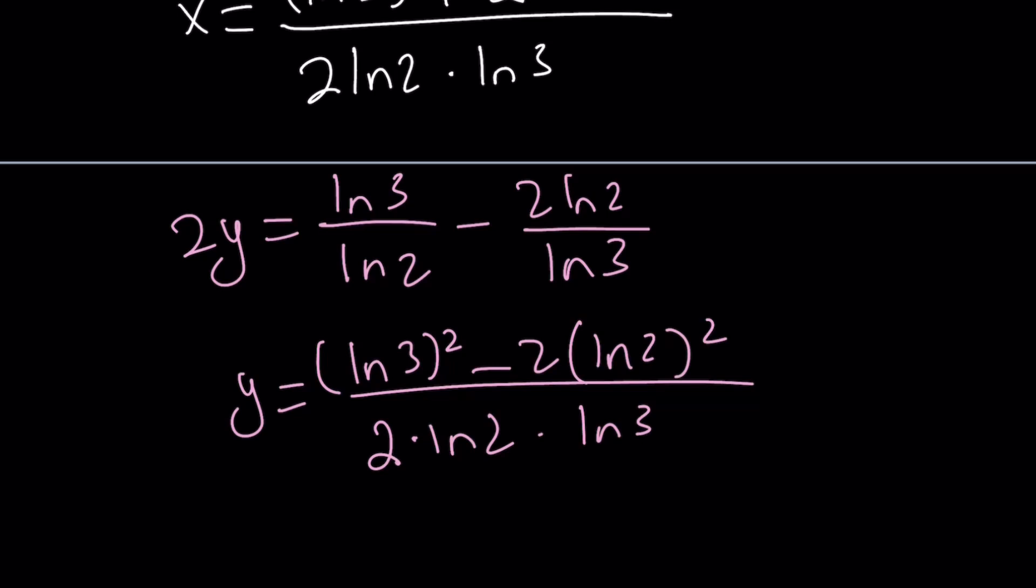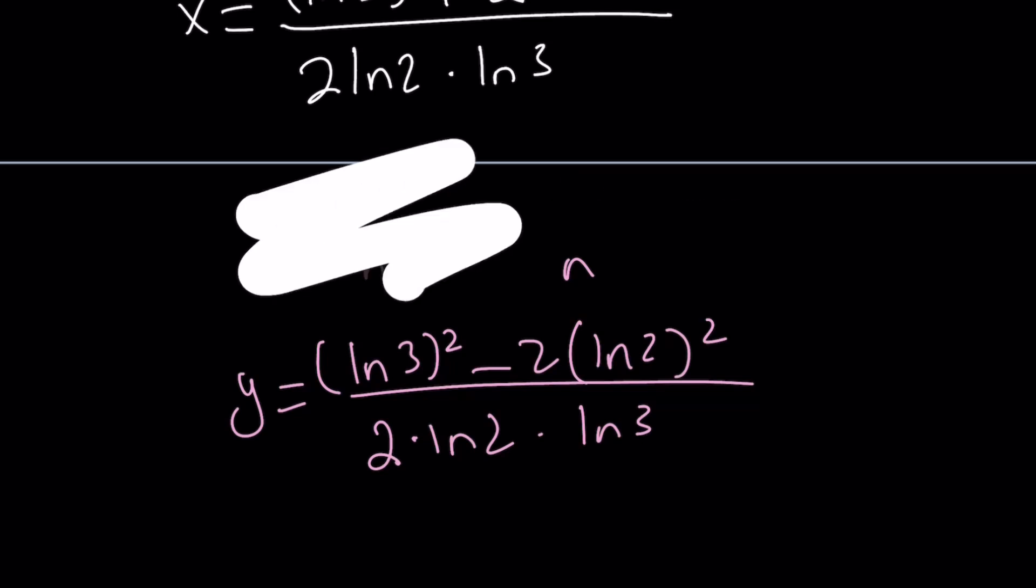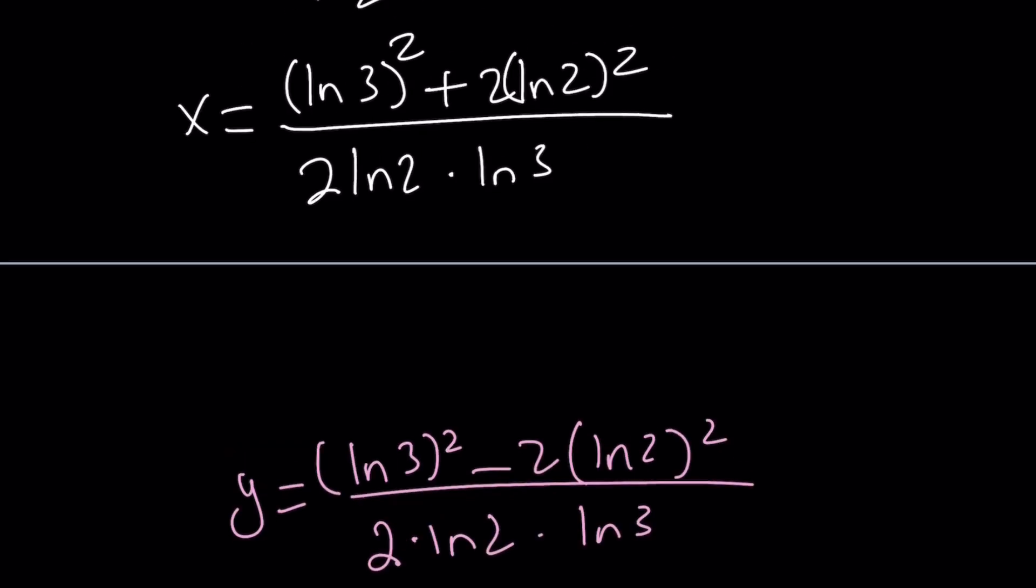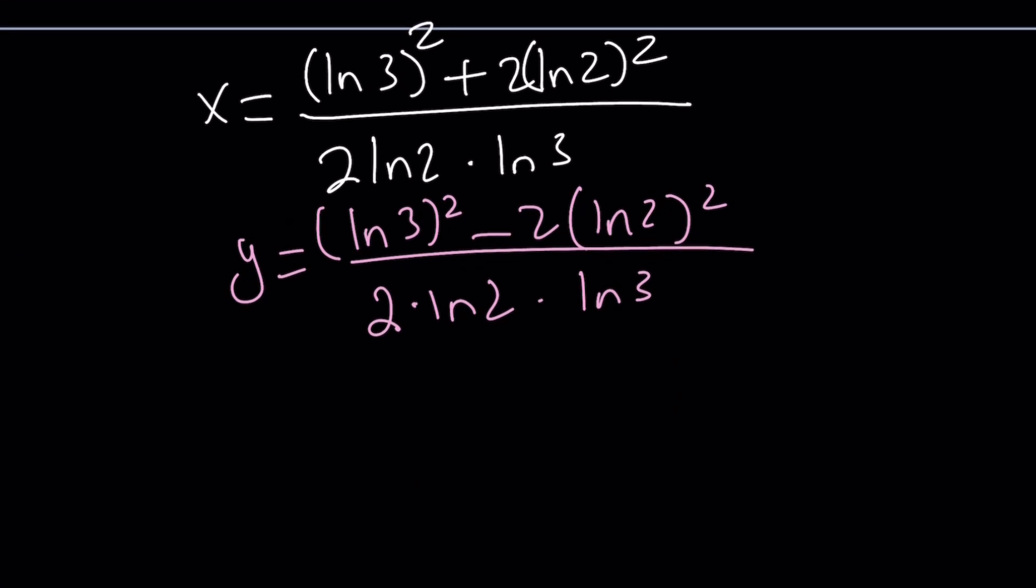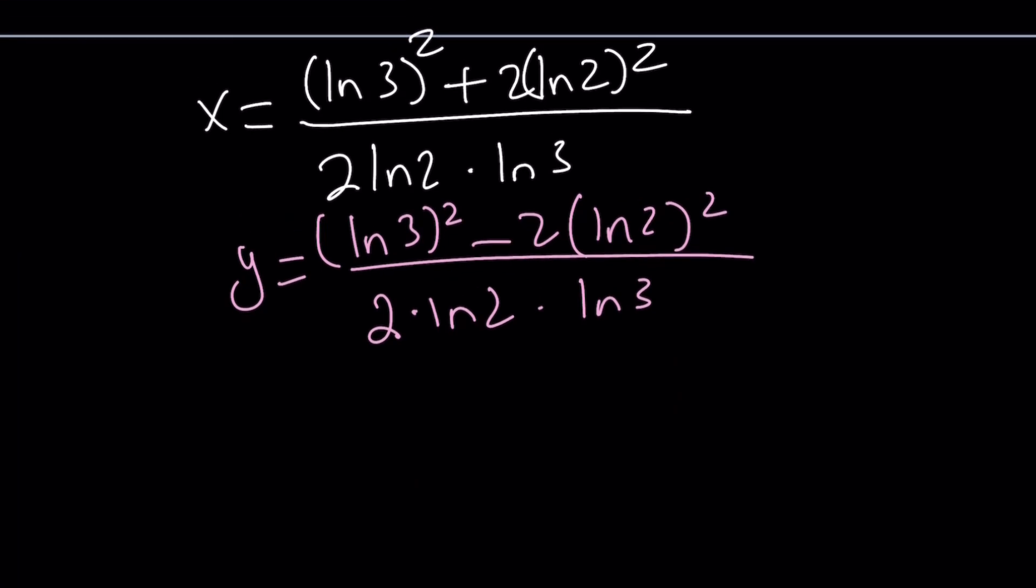So we got the values of x and y. Our goal is to get x squared minus y squared. So how do we get that? The obvious answer is square both of these and subtract. To make the squaring and subtraction a little easier, let's call this a and let's call this b. So we have a plus b and a minus b in the numerators. And the denominators are the same.